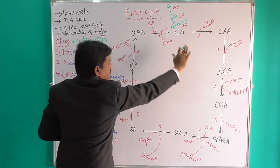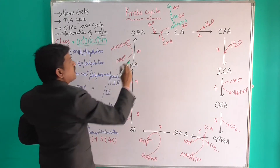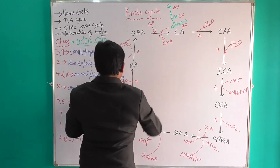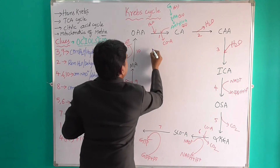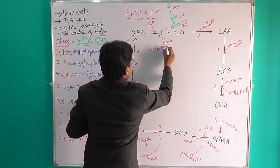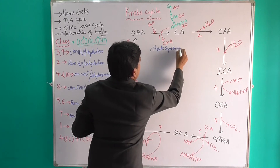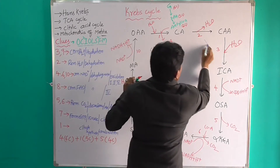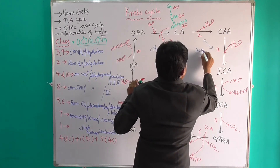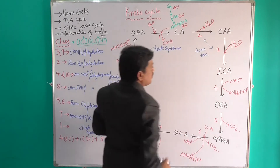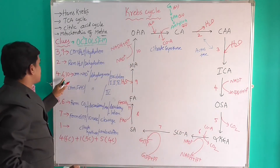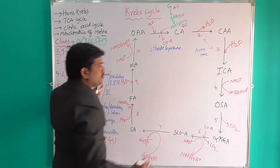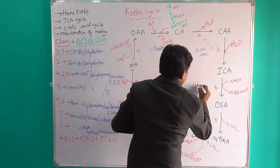Stage 1 — Condensation — is completed. The enzyme for stage 1 is Citrate Synthase. Stage 2 and stage 3 use the enzyme Aconitase. Stages 4, 6, 8, and 10 — which involve NAD reactions — use the enzyme Dehydrogenase.